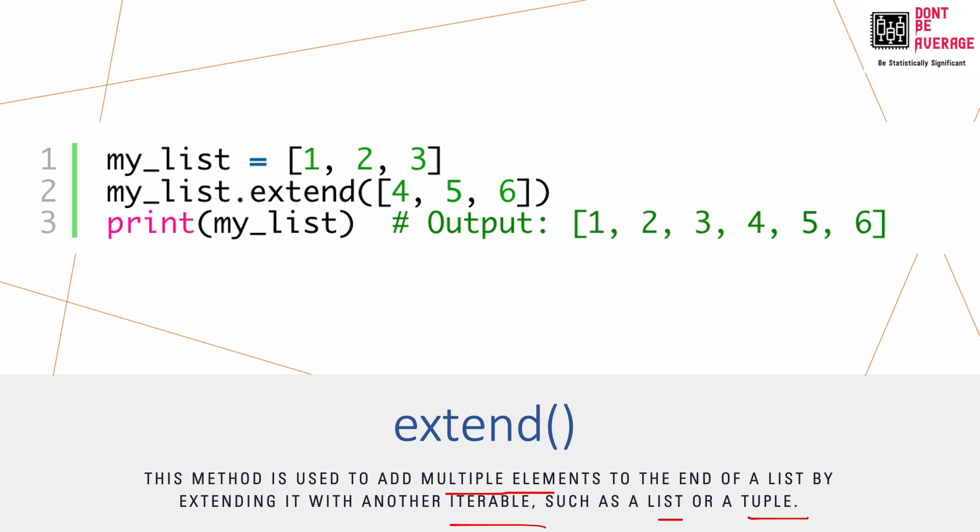In this example, I already have a list and I've applied the extend method to it. Inside the arguments of the extend method, I've passed another list with three elements. After doing that, I get a flat list with all six elements. That's how extend works.